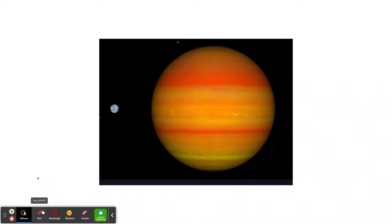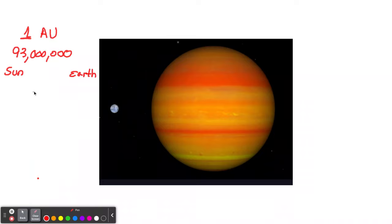If we look at how far away it is from its star, it's so much closer than Mercury is. We think of AU as astronomical units. Earth to the sun is one astronomical unit, which is about 93 million miles. Mercury, our closest planet to the sun, is 0.4 AU.